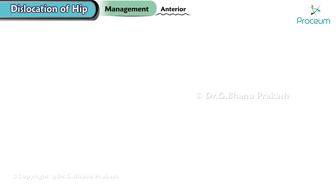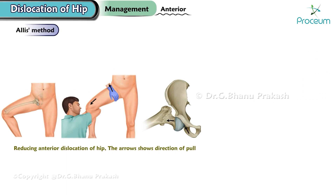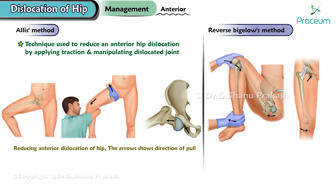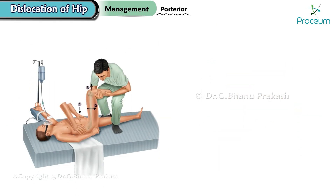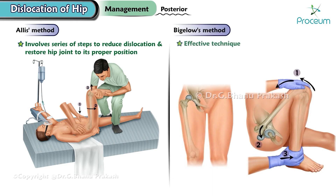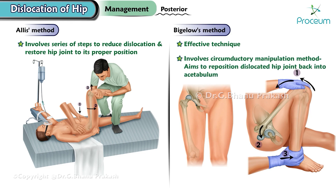Management. Anterior hip dislocation can be managed using Allis' method, a technique used to reduce an anterior hip dislocation by applying traction and manipulating the dislocated joint, or the Reverse Bigelow's method. Posterior hip dislocation can be effectively treated using Allis' method, which involves a series of steps to reduce the dislocation and restore the hip joint to its proper position. Bigelow's method is an effective technique involving a circumductory manipulation approach that aims to reposition the dislocated hip joint back into the acetabulum.